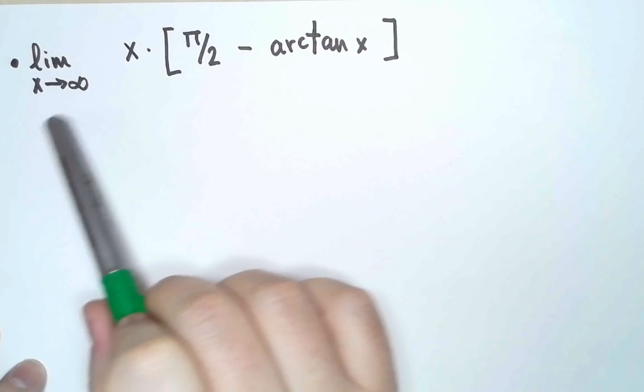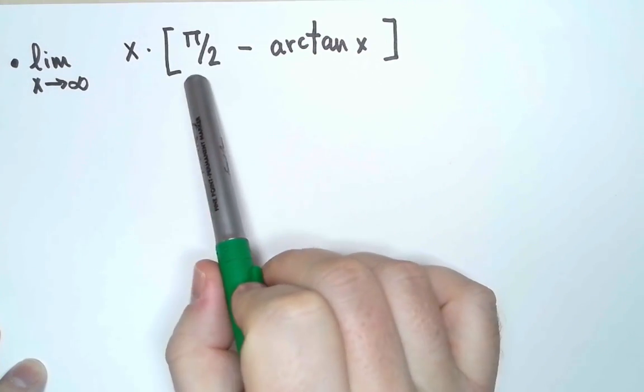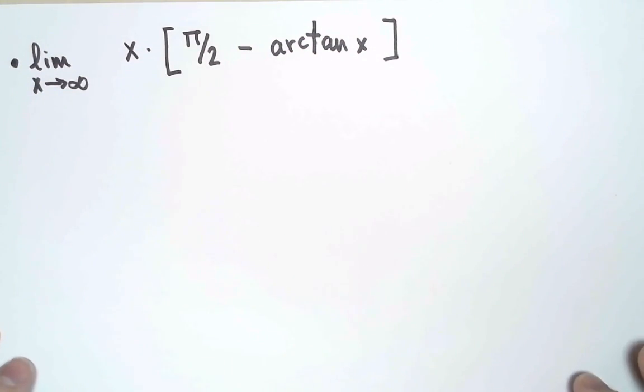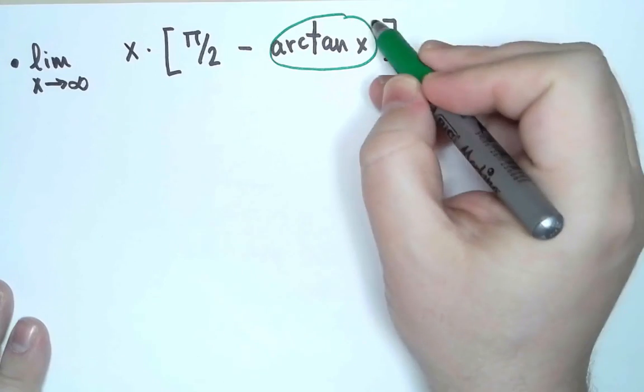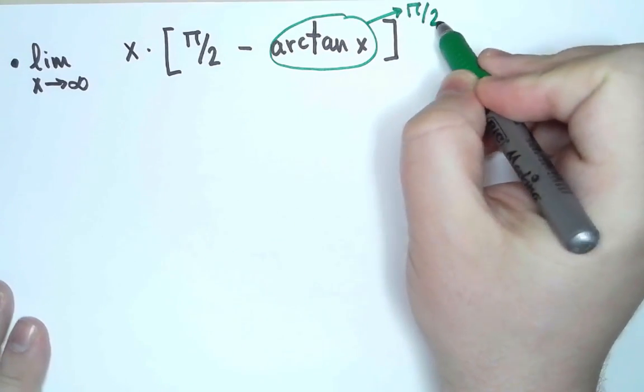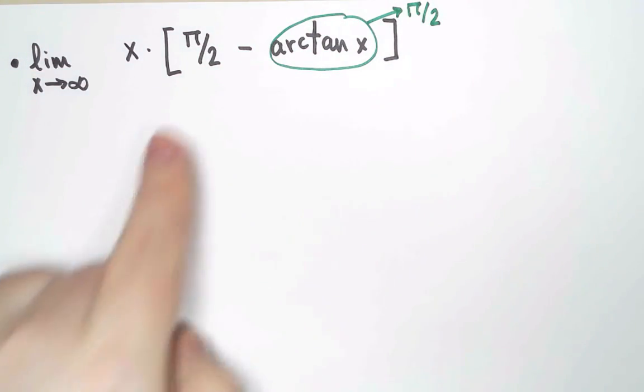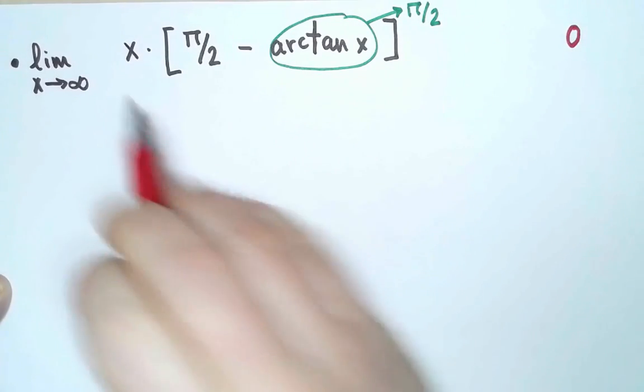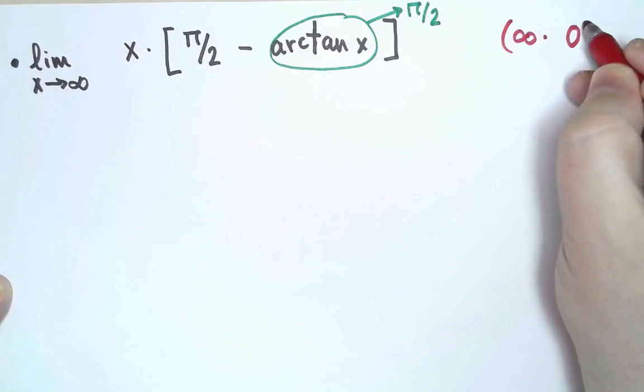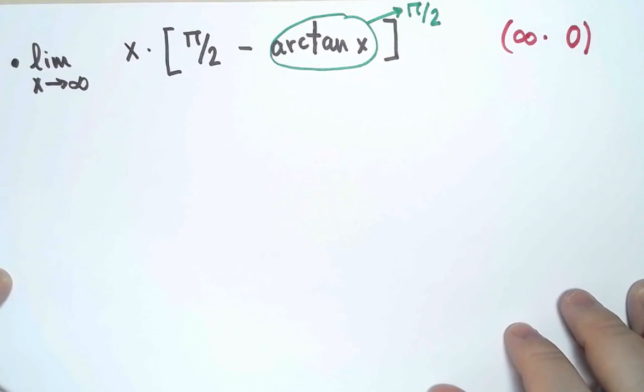I want to compute the limit as x approaches infinity of x times π over 2 minus arctan x. This is a product of two functions, so first let's see what the limit of each factor is. As x approaches infinity, the limit of arctan x is π over 2, so the limit of π over 2 minus arctan x is going to be 0. And on the other hand, the limit of x is infinity. So I have infinity times 0, which is an indeterminate form.